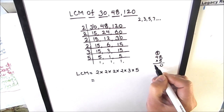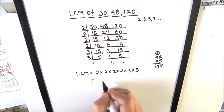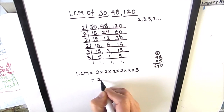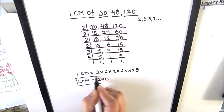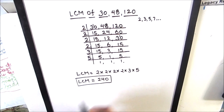So the LCM of the three numbers 30, 48, and 120 is 240. This is how we find the LCM of three numbers using prime factorization. I hope this video is helpful to you. If you like the video, please hit the like button and subscribe to my channel for more math videos. Thanks for watching!